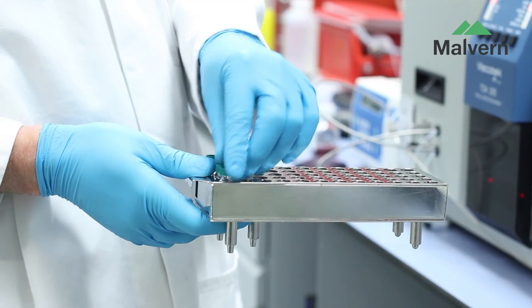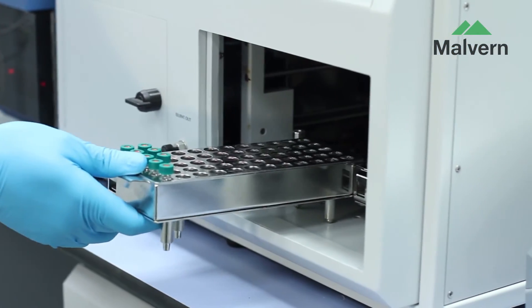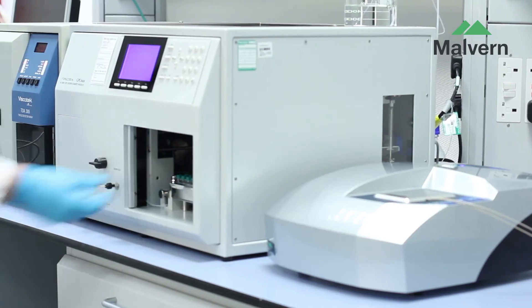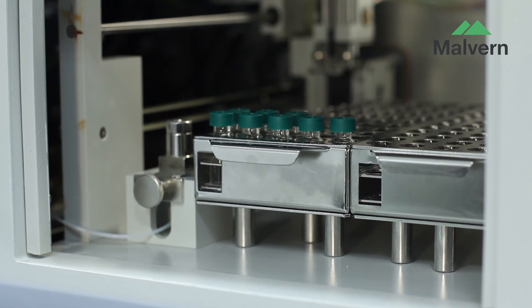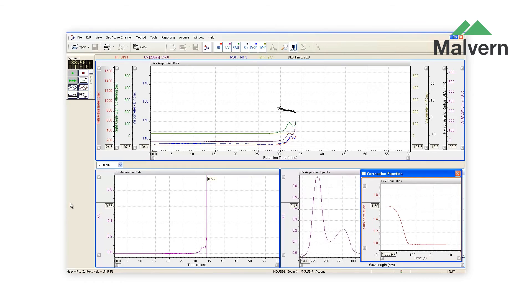When used alongside your ultraviolet or refractive index detector, it gives you absolute molecular weight and size. This enables confirmation of the oligomeric state of your protein, quantification and sizing of any aggregate present and much more.